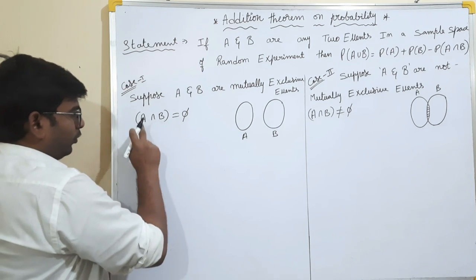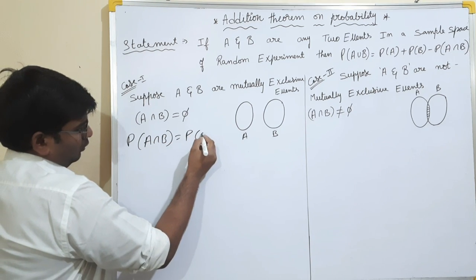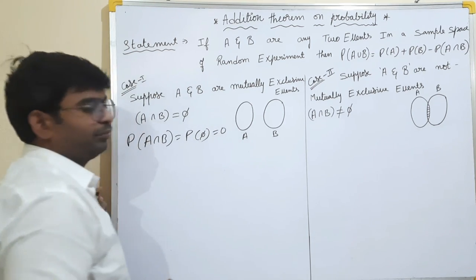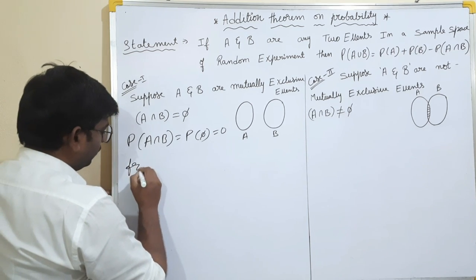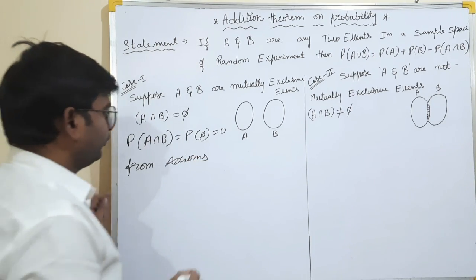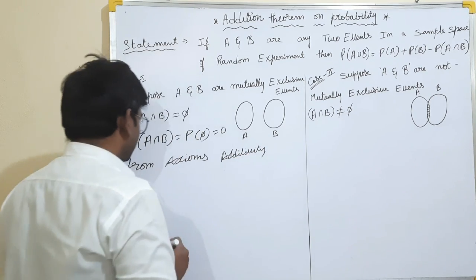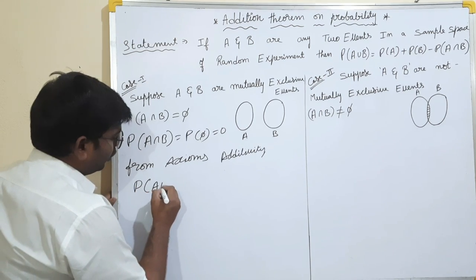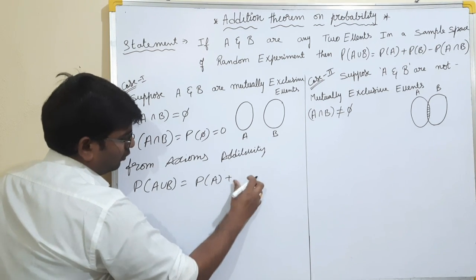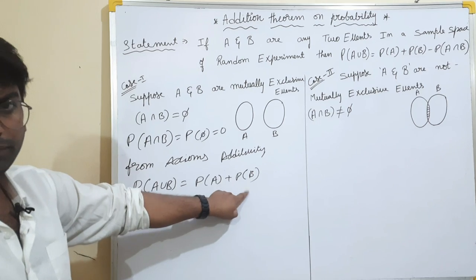Now, the first condition is A intersection B is equal to 0. If we want the common thing to be zero, we apply probability to both sides. Then, by the axioms of additivity, P of A union B equals P of A plus P of B.